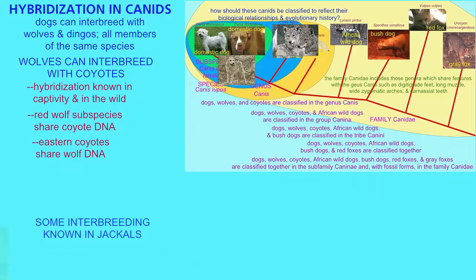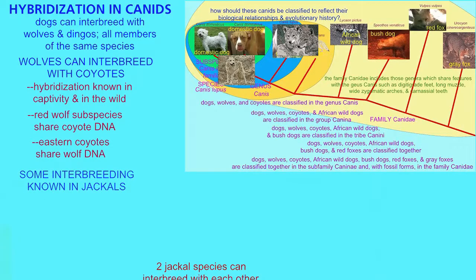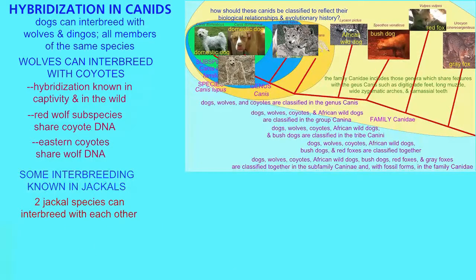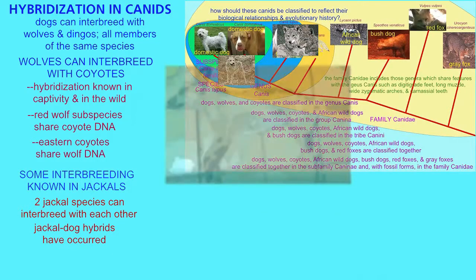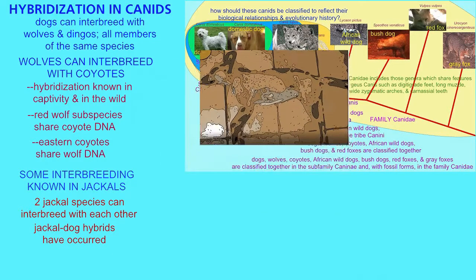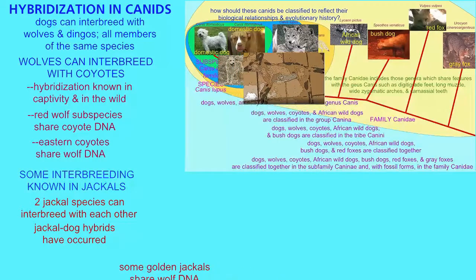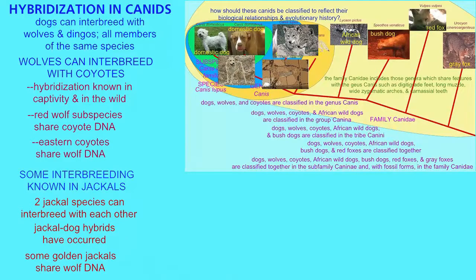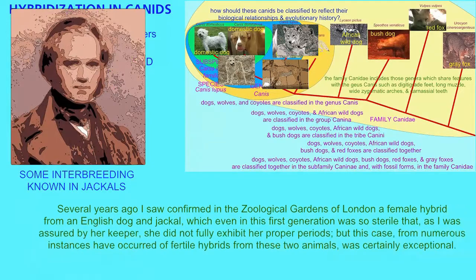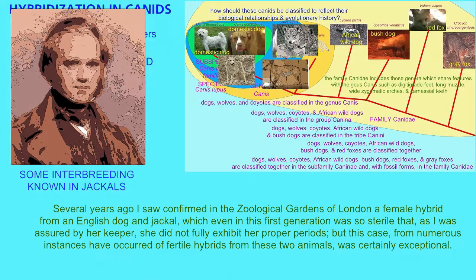There are two species of jackal classified in the genus Canis, and they can interbreed with each other, and on rare occasions with other Canis. Hybridizations have occurred between jackals and dogs, and some golden jackals possess wolf DNA. Darwin himself noted in a zoo a hybridization between a dog and a jackal, observing that some hybrids appeared infertile while others could give rise to fertile offspring.